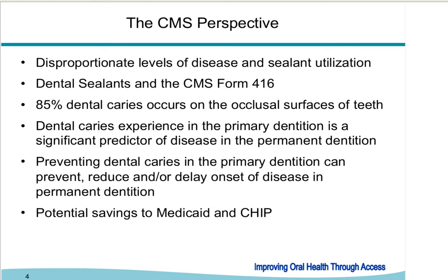Everyone understands that caries in the primary dentition is a significant predictor of disease in the permanent dentition. Children are at higher risk if they have had caries, not only in primary teeth but also as they grow into adulthood. We need to remember that caries is a disease process. All too often we talk about tooth decay and holes — but a cavity is just the end of a long, complicated disease process that can be stopped and reversed. The hole in the tooth is not the disease.